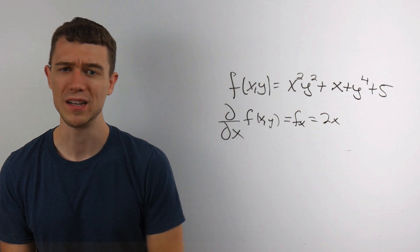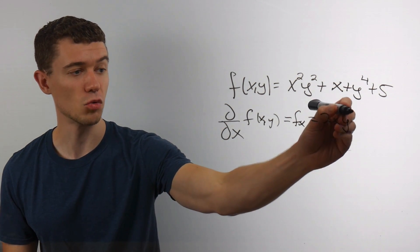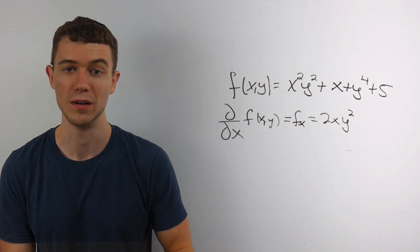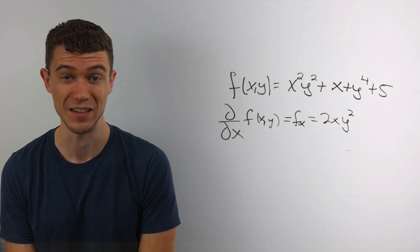And what about the y squared? Well, we just leave it because derivatives keep constants. Constants stay along for the ride when we're taking derivatives. And the partial with respect to x, y is a constant here.